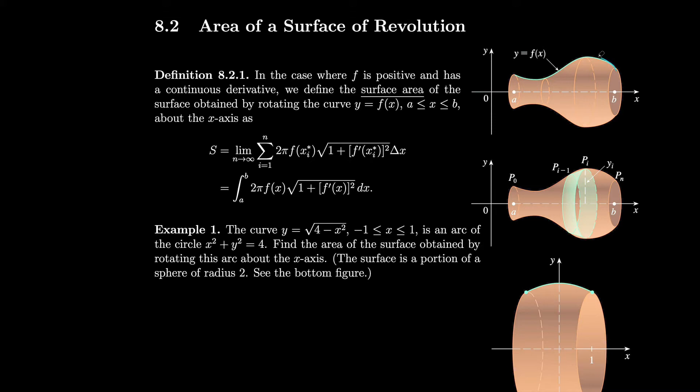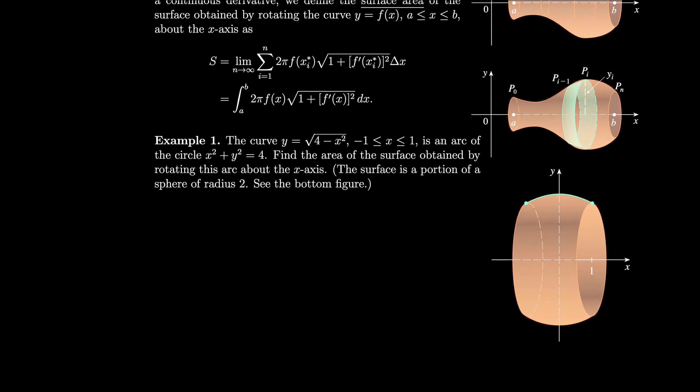We just take some curve, spin it around and around, and we only consider the points where we touch when we spin. We don't consider anything on the inside. So let's do an example of this.